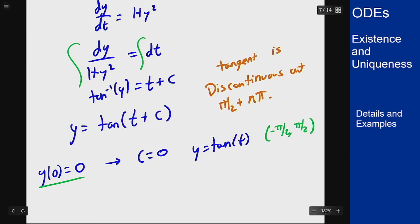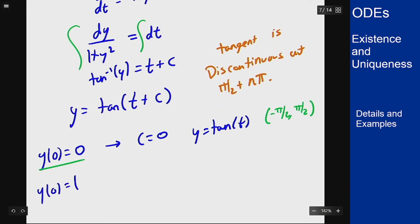Now what if I take y(0) = 1? This means I need tan(c) = 1, so I can take c = π/4. And my solution is tan(t + π/4), which exists on the interval from -3π/4 to π/4. Because I'm starting at t = 0, t = 0 needs to be in this interval, and those are the next discontinuities of the tangent function when I add π/4 to them.